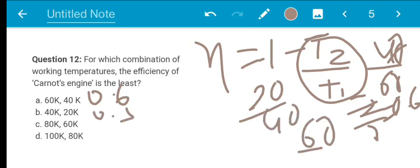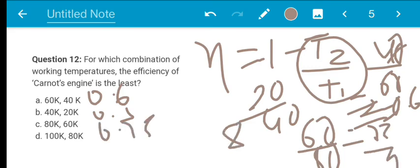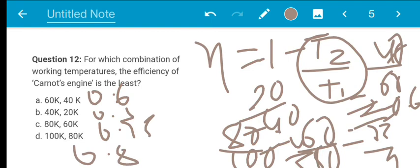20 by 40 is 1 by 2 is 0.5. Next, 60 by 80 is 3 by 4 is 0.75. 80 by 100 is 4 by 5 is exactly 0.8. So 0.8 is the largest value. 1 minus 0.8 is the least value. 0.2 is the least value. So option D is the correct answer.